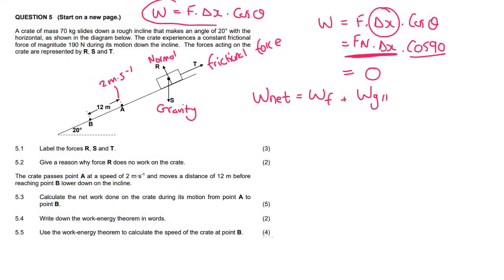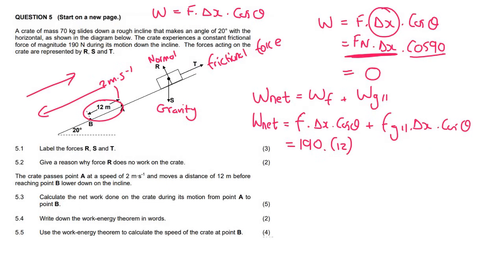So we would say that W net is equal to W due to friction plus W due to gravity parallel. Now I'm going to use this formula on each of those now. So that means that W net is going to be equal to the W due to friction, which is the force of friction times by X times by cos theta plus FG parallel times delta X times cos theta. See what I did there? I used this formula on each of those. Okay. And so the force of friction is 190. The distance that we are moving is 12. Now we're moving in this direction, but gravity, I mean, friction acts in the opposite direction. So that's going to be cos 180.